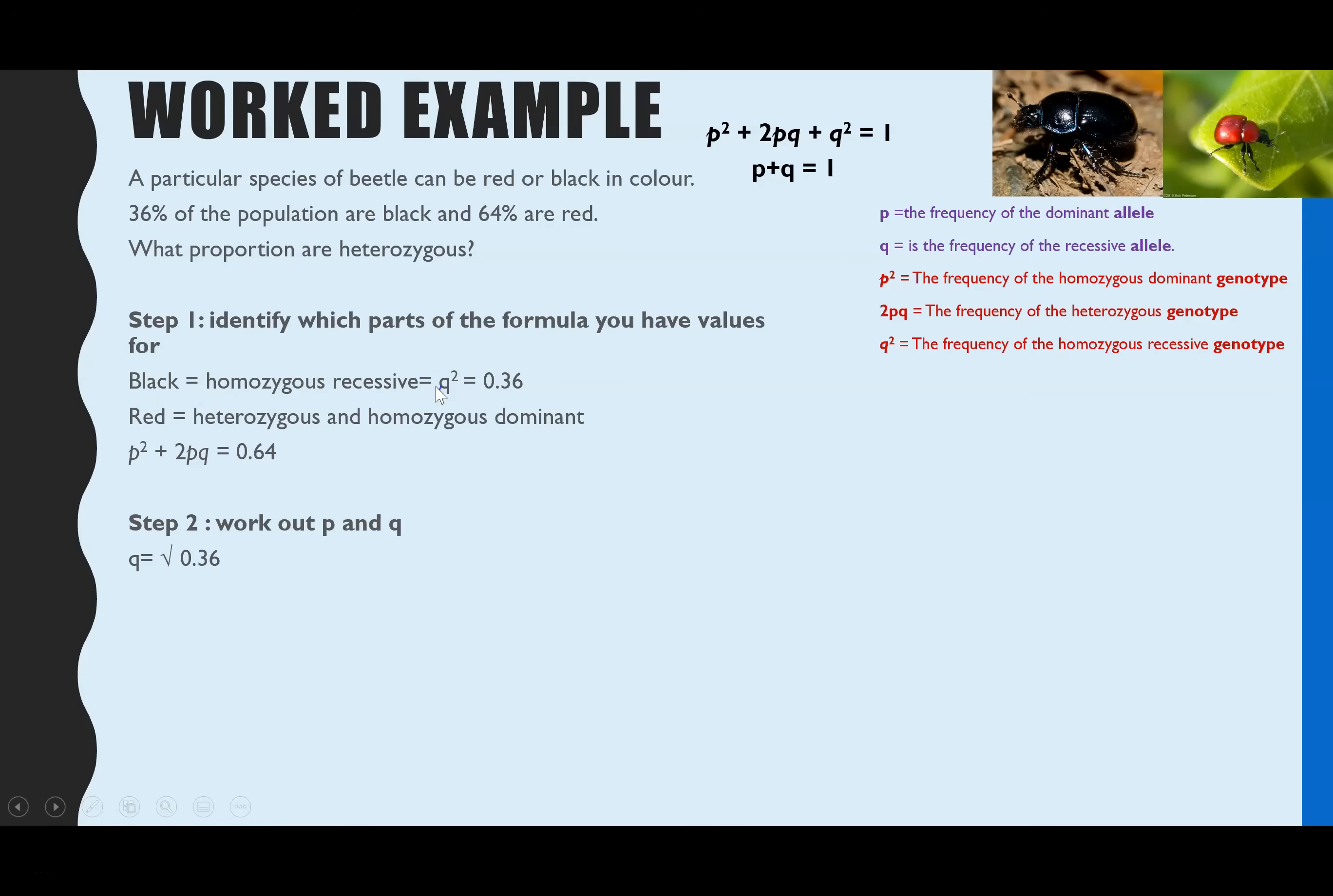So Q squared, first step is square root. Square root 0.36, and that is 0.6. Then we use the P plus Q equals 1 formula. Rearrange it to work out P. So P is 0.4.